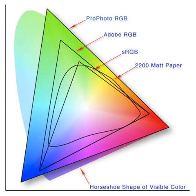Colors can be created on computer monitors with color spaces based on the RGB color model, using the additive primary colors red, green, and blue. A three-dimensional representation would assign each of the three colors to the x-, y-, and z-axis.